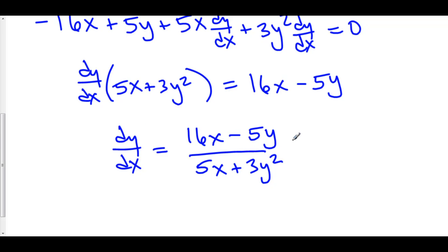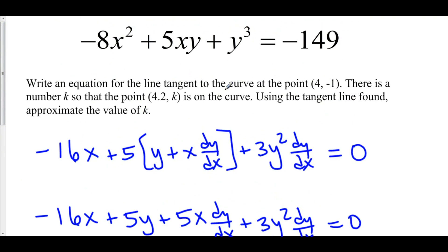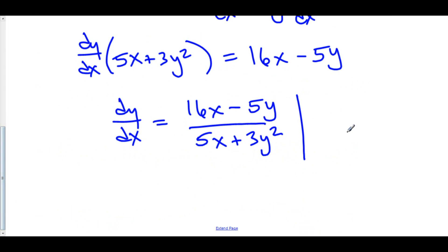And of course we want to find the derivative at the point given to us which is 4 comma negative 1. So we'll plug in 4 comma negative 1. 16 times 4 minus 5 times negative 1 is plus 5 over 5 times 4 plus 3 times negative 1 squared is just 3.